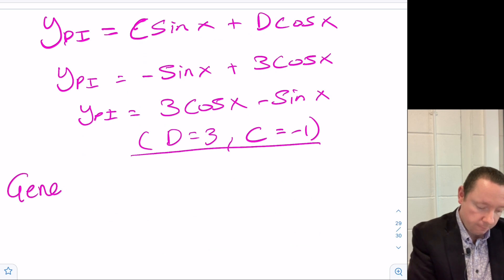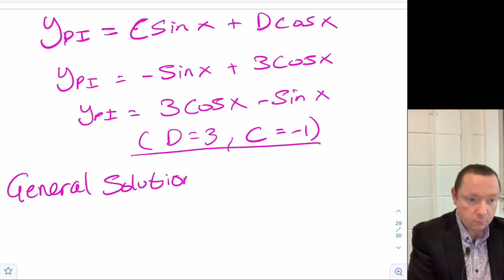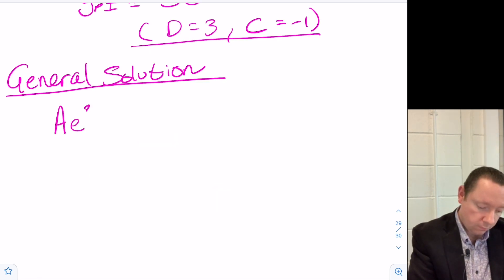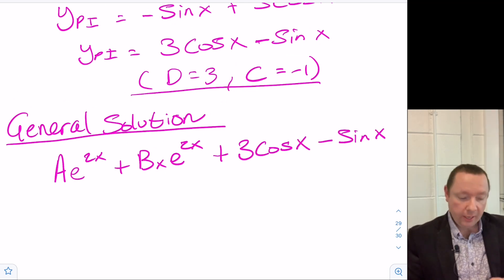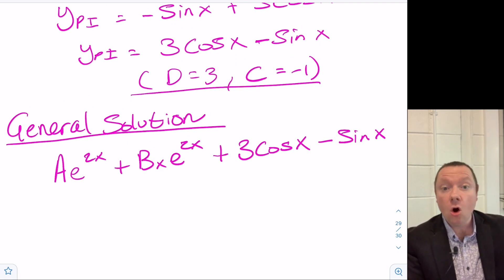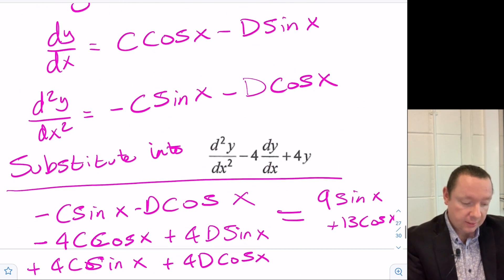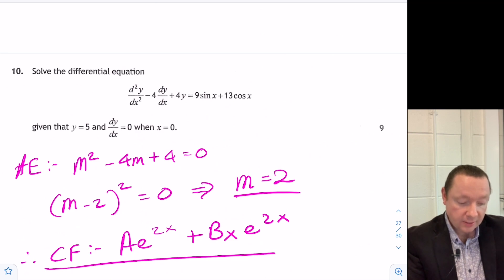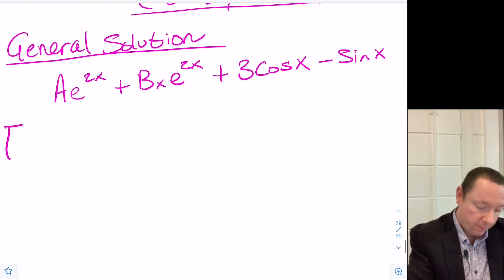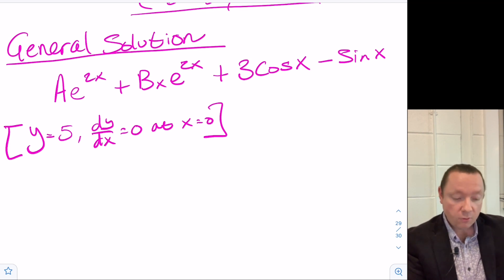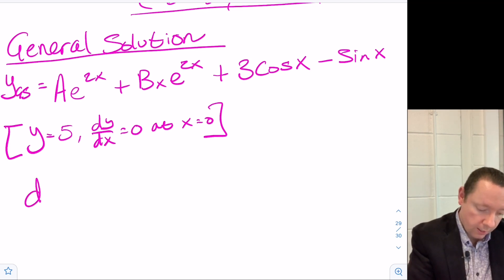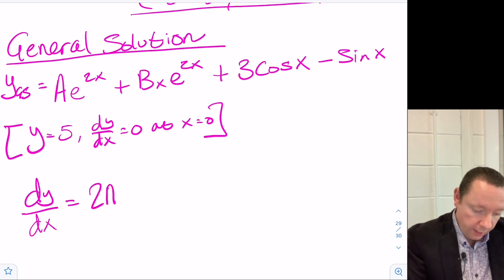The general solution is the complementary function plus the particular integral: y equals a·e^(2x) plus b·x·e^(2x) plus 3·cos(x) minus sin(x). Now we use the boundary conditions y equals 5 and dy/dx equals 0 at x equals 0. Differentiating: dy/dx equals 2a·e^(2x) plus 2b·x·e^(2x) plus b·e^(2x) minus cos(x) ... wait, the trig derivatives are minus sin(x) becoming minus cos(x) and minus sin(x).